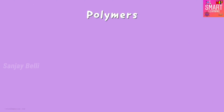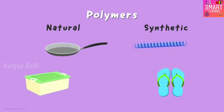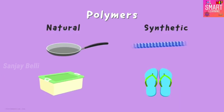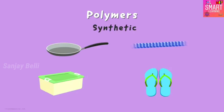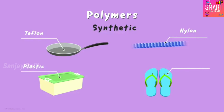Polymers can be naturally occurring or synthetic, which means manmade. Now, which among these examples are natural and which are artificial? Well, all of them are artificial. Yes — the frying pan has a surface of Teflon, the rope is made up of nylon, the container is plastic, and the slippers are simply processed rubber.